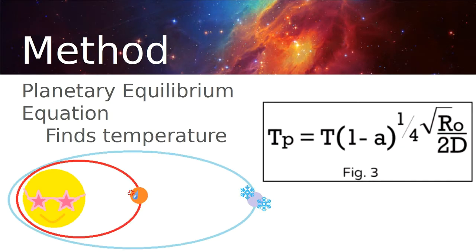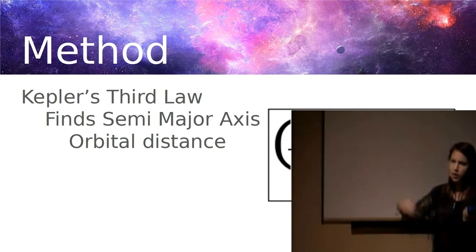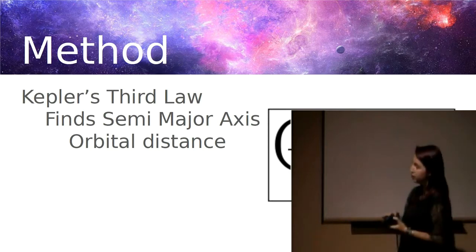So my next thing was using Kepler's third law. We all know Kepler. Yeah, he's a cool kid. And this would help me find the semi-major axis or orbital distance. Now this is the cube root of the radius of the planet squared times the mass of their star divided by the mass of our sun, divided by Earth's period, which is 365 squared, to the one-third power. And that will get us how far their star and the planet is.